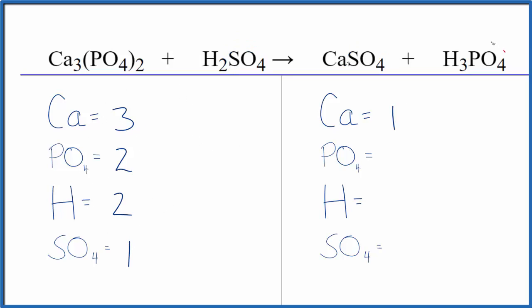Product side, we have one calcium, one phosphate, three hydrogens, and then just one sulfate.